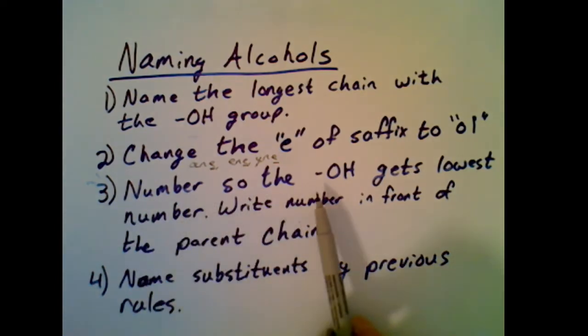When we number it, we also make sure that the OH gets the lowest number possible. This means we start to forget about the sum. The sum is only important if you could number and get the same number, but really what you need to do is make sure that above all the alcohol gets the lowest possible number that you can give it.